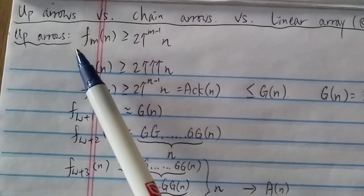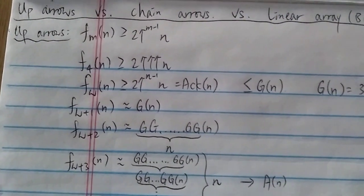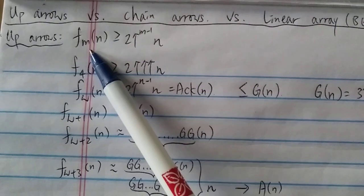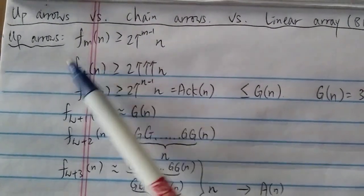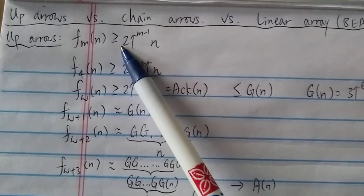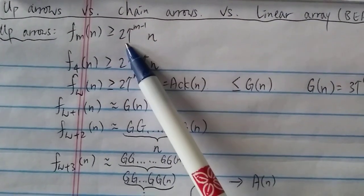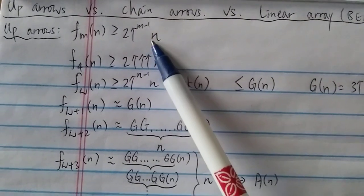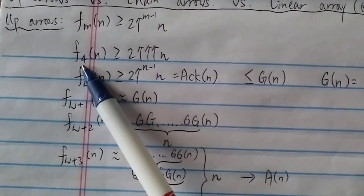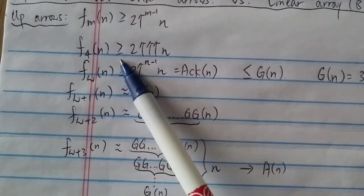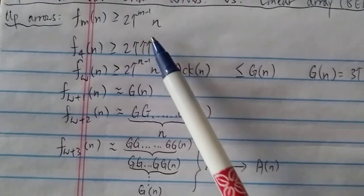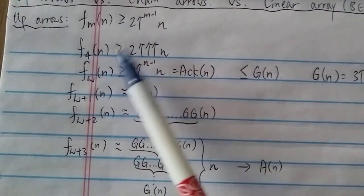Let's start with the easier one first - up arrows. This is very straightforward: f(m,n) is around or slightly greater than 2 with (m−1) arrows n. You can see the pattern: for example, f(4,n) grows slightly faster than 2 with 3 arrows n, so the number of arrows is m−1.